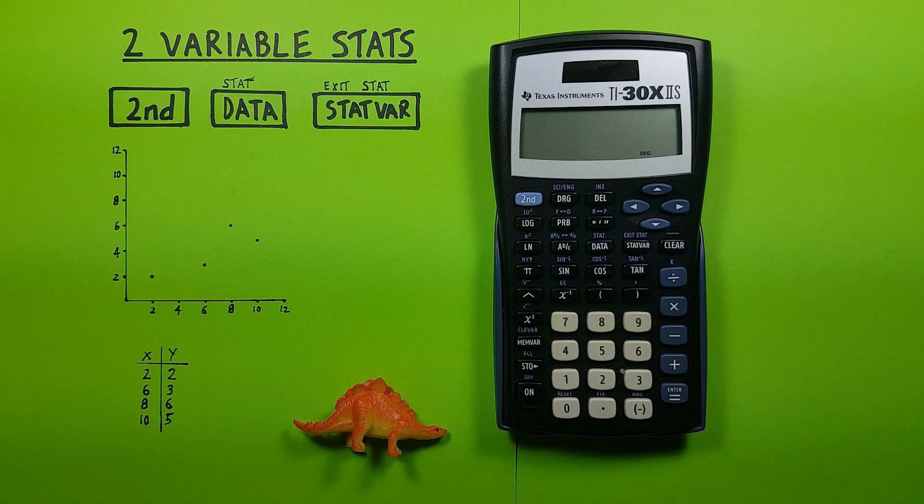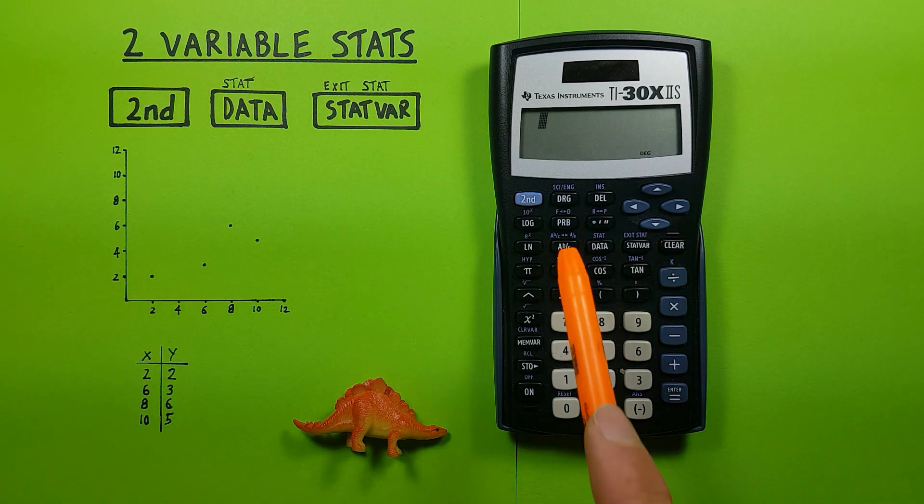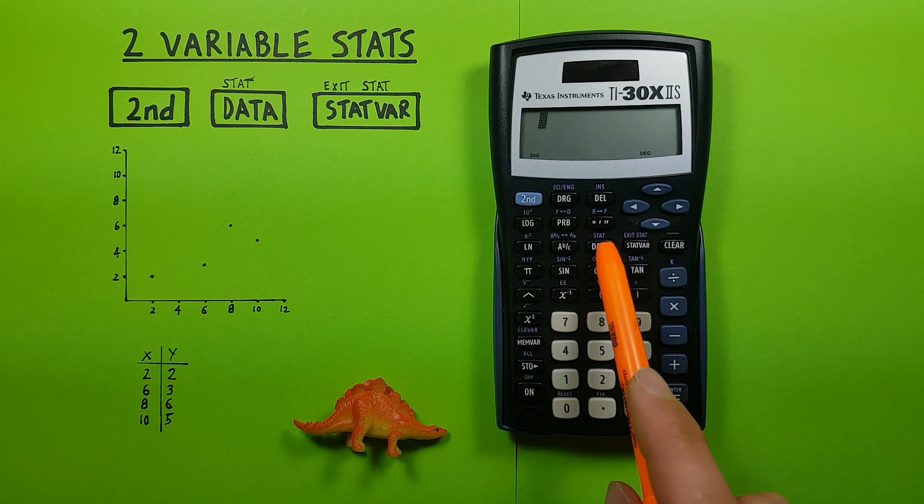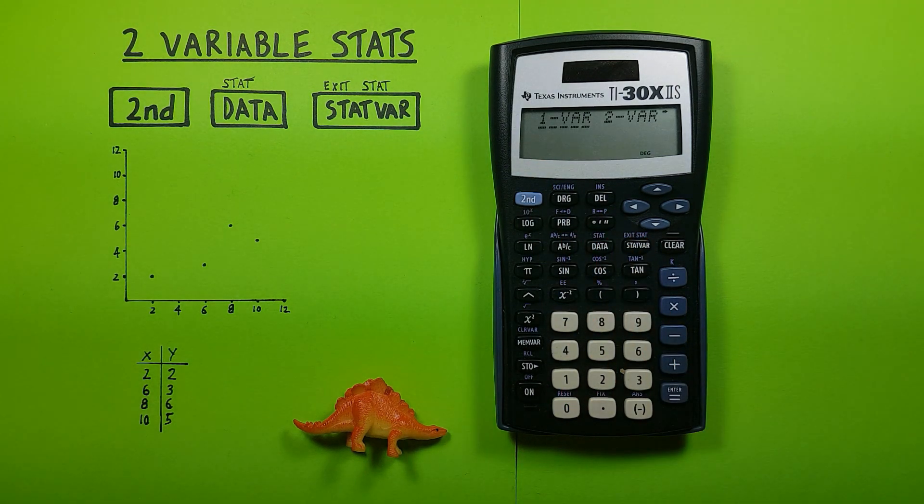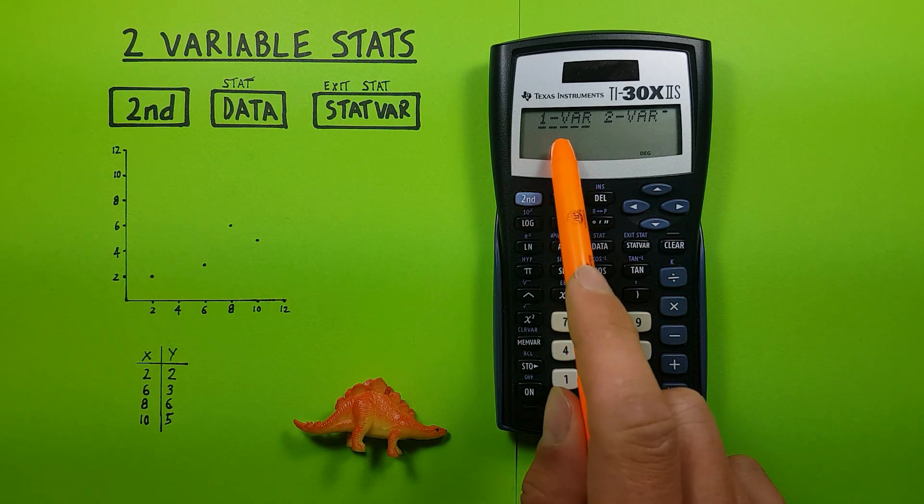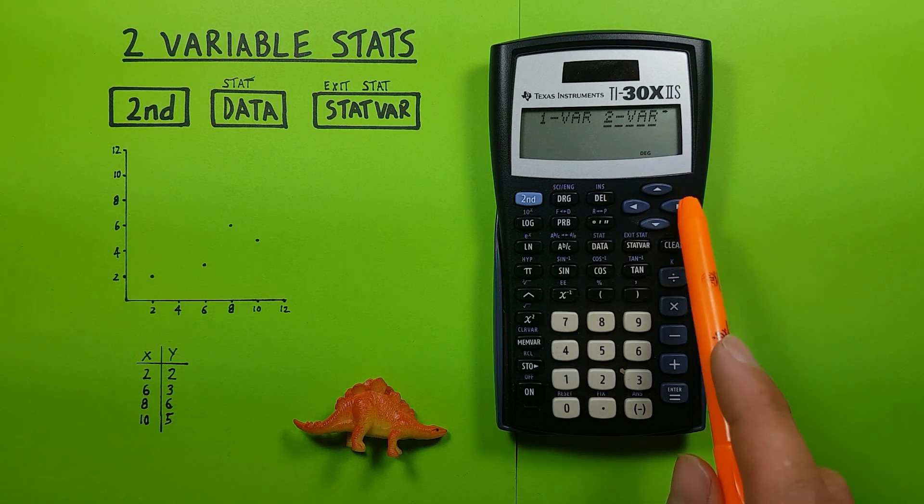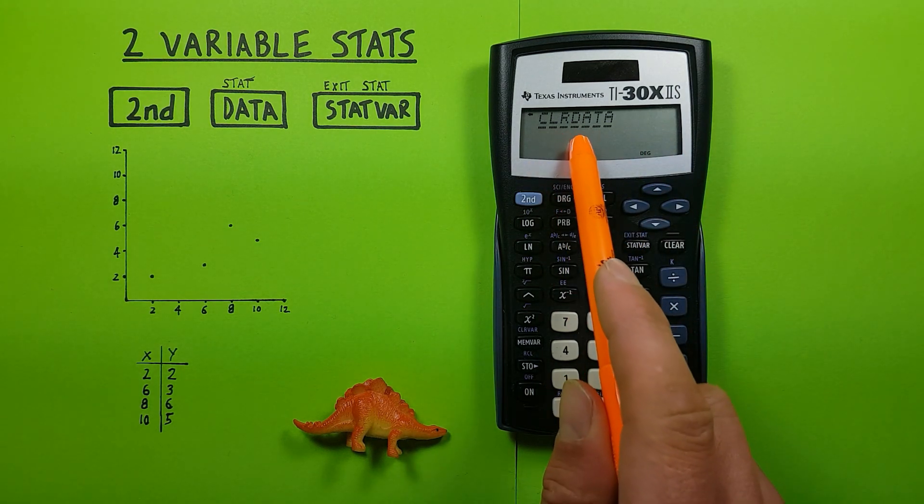First thing we're going to want to do is put our calculator into statistics mode. To do that we press the second key and then the data key. This will bring up this menu here. We have the one var stat, to the right we have two var stat, and if we go one more over we get this clear data option.